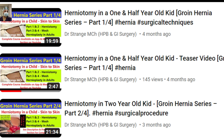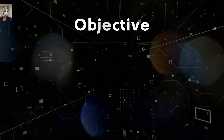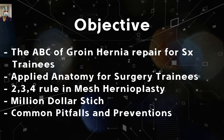All the videos on our app and YouTube channel are meant for information and education purposes only and are not a substitute for expert and professional advice. The main objectives of this video series are to cover the ABC of groin hernia repair for surgery trainees in minute detail — every step will be covered, including applied anatomy, the rule of two-three-four covering mesh overlap, the million-dollar stitch to avoid recurrence, and common mistakes and preventions.